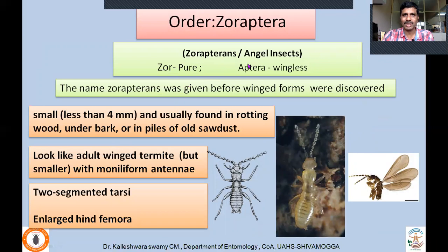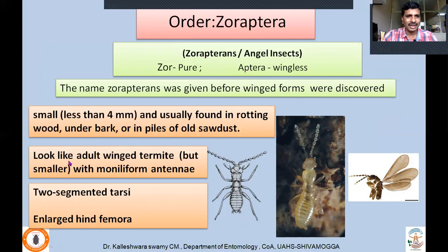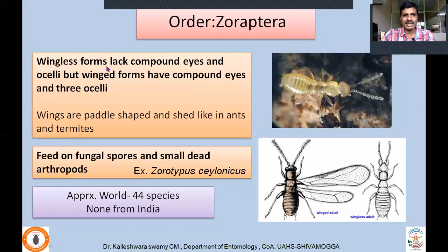Next order: Zoroptera — commonly called Zoropterans or angel insects. 'Zoros' means pure; 'aptera' means wingless. This is another misnomer — the name may have been used before winged forms were discovered, because we find both wingless and winged forms in Zoroptera. They are small insects, less than 4 mm, usually found in rotting wood, under bark, or in piles of old sawdust. They look like adult winged termites but are smaller, with only filiform antennae. Two-segmented tarsi; hindwing femur is enlarged. Wingless forms lack compound eyes and ocelli, whereas winged forms have compound eyes and three ocelli.